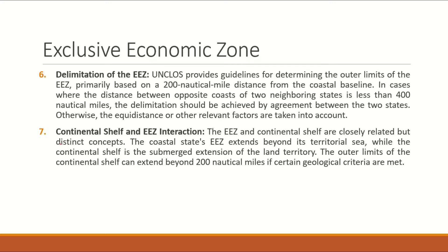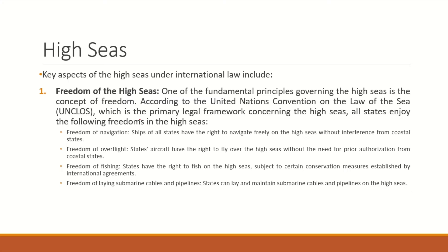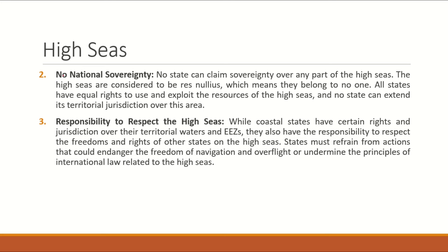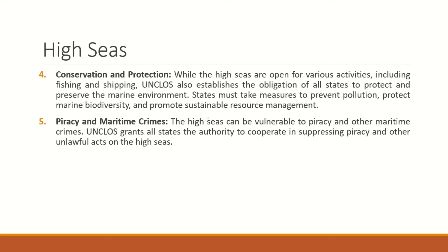The next maritime zone is the High Seas. High seas start beyond a coastal state's exclusive economic zone. The second name for high seas is international waters, and they cover two-thirds of the Earth's surface area. High seas are not under any state's jurisdiction and are common resources for all states. Key features: 1. The underlying principle of the high seas is freedom. 2. No state's sovereignty can be claimed over the high seas, as they can be considered res communis — a Roman law concept denoting that there is no private ownership. 3. States must not endanger the freedom of the high seas or undermine the laws related to the high seas. 4. All states have equal claims to high seas resources but have obligations under UNCLOS to protect and preserve the marine environment. 5. UNCLOS requires states' cooperation to prevent piracy and other maritime crimes, especially in relation to the high seas.